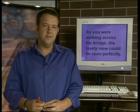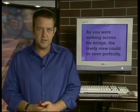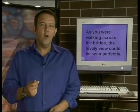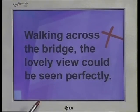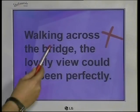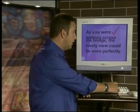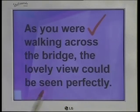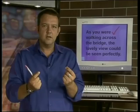Let's look at the other example. I've called it ambiguity caused by lack of subject. How can we define a method by which to fix this error? Let's look at a quick step-by-step process. You'd need to identify the verbs and participles, check whether the verbs have subjects, and then give an appropriate subject to the verb. Take one more look at this example. Remember, this was incorrect because the word 'walking' — the verb or participle — did not have a subject, something to do it. Here's the corrected example: 'As you were walking across the bridge, the lovely view could be seen perfectly.' So what we've done is allow 'you,' the subject, to do the walking.